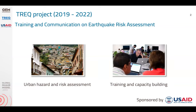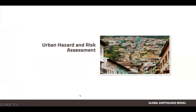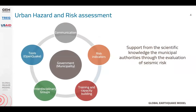Today this is the kickoff — this presentation will be more like an overall description of what we have done. We will focus on the urban risk assessment component. The TREC Project was done during 2019 and 2022, and it was a project sponsored by USAID. The project was divided in two main components: one for urban hazard and one for training and capacity building.